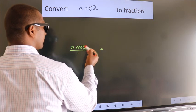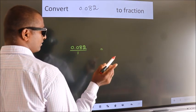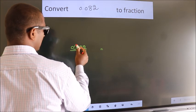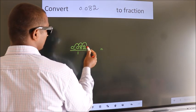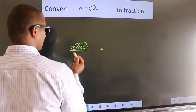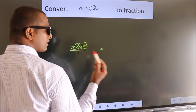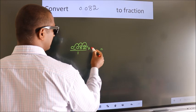To convert this to fraction, for that we have to move this decimal after 1, 2, 3 numbers. To move this decimal after 3 numbers, we should multiply it with 1000.